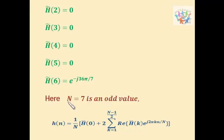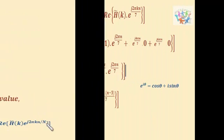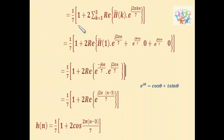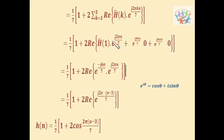Since capital N equal to 7 is an odd value, we use the formula for h(n) as (1/N) times H̄(0) plus 2 times the sum from k equal to 1 to (N−1)/2 of the real part of H̄(k) times e^(j2πkn/N). Substituting values, we get (1/7) times 1 plus 2 times the sum from k equal to 1 to 3 of the real part of H̄(k) times e^(j2πkn/7). Since H̄(2) and H̄(3) equal 0, only H̄(1) times e^(j2πn/7) remains.